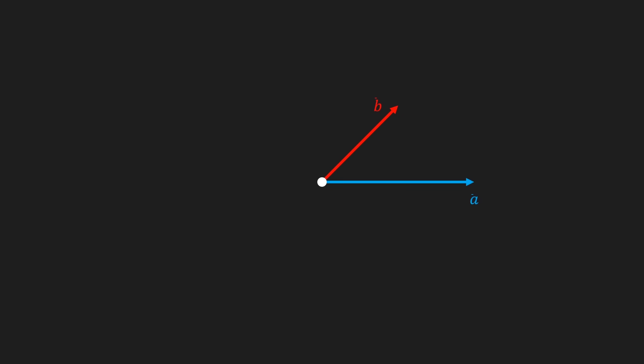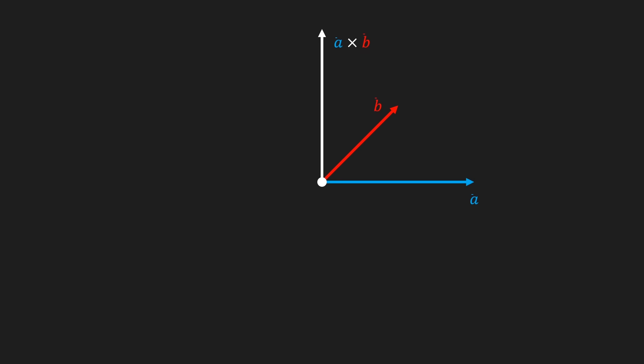To visualize what the cross product means, I'm gonna draw vector a and vector b. Their cross product is equal to this white vector. Unlike the dot product, the order in which you take the cross product of two vectors actually matters, because if you take the cross product of b and a you get a vector that points in the opposite direction. So you could therefore say that the cross product of b and a is equal to the opposite of the cross product of a and b. The cross product results in a vector that is perpendicular to the original vectors.